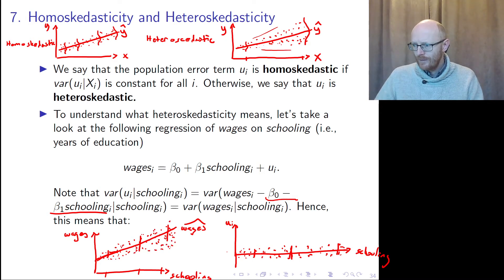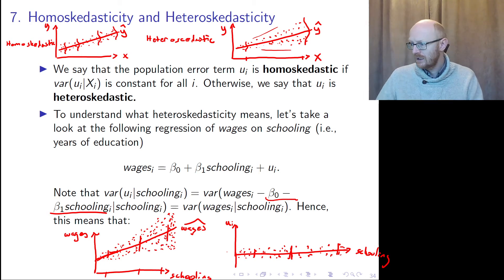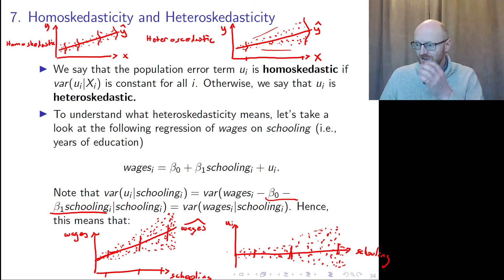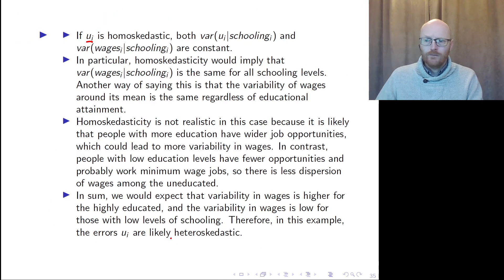We would probably see something like this: more dispersion for higher levels of schooling than for low levels of schooling. You would see that both in the wages on schooling plot and also in the residual plot.